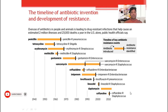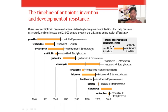We can easily understand from this figure the timeline of antibiotic invention and development of resistance. Penicillin was introduced in 1940 — it was actually discovered in 1930 by Alexander Fleming and came into wide clinical use in 1940. It was widely used during the Second World War by soldiers injured in Germany, France, England and Russia. Penicillin was introduced in 1940 and, unfortunately, the resistant strain Staphylococcus was identified around 1965.